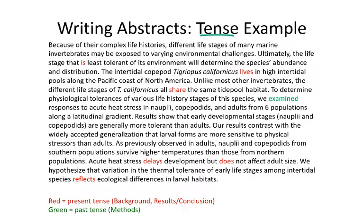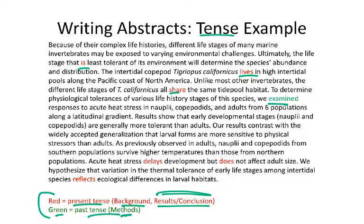Here's a tense example. The details of this abstract aren't important — what I want you to pay attention to are the patterns of the colored words. Everything colored in red is present tense: the background, results, and conclusions. Everything in green is past tense: the methods. In the beginning we're using present tense for the background — 'is,' 'lives,' 'share.' Roughly in the middle we switch to past tense, 'examined,' because we're talking about the methods we actually did. Then at the end we switch back to present tense for results and conclusions: 'delays,' 'does,' and 'reflects.'